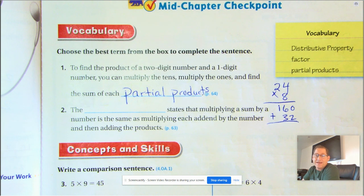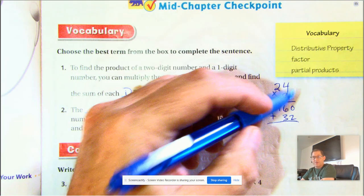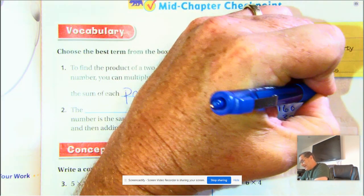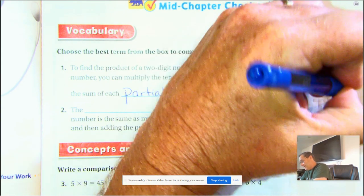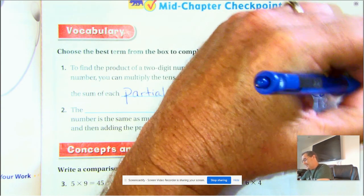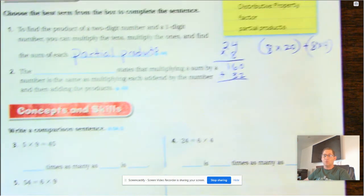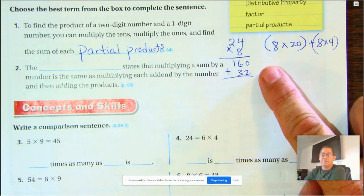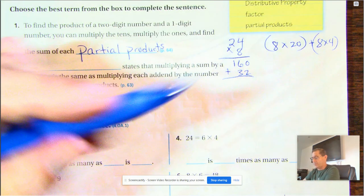The blank states that multiplying a sum by a number is the same as multiplying each addend by the number and then adding the products. So if we're taking this 24 again, so it's basically saying 8 times 20 plus 8 times 4. And so what property are we talking about here? The distributive property.